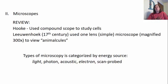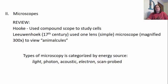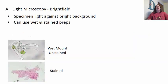The types of microscopes we want to look at are going to be characterized based on their energy source — whether that energy source is light, photons, acoustic, electron, or a scanning type probe. The ones we use in the lab are the light microscopes, though in some places you may have access to electron microscopes at a larger university. We're going to take a look at these different types, starting with light microscopy first.